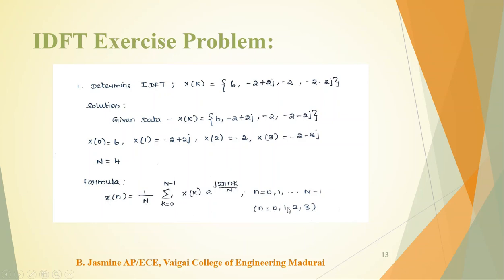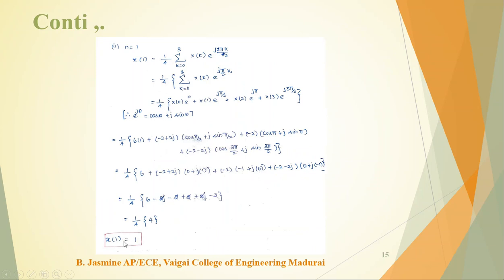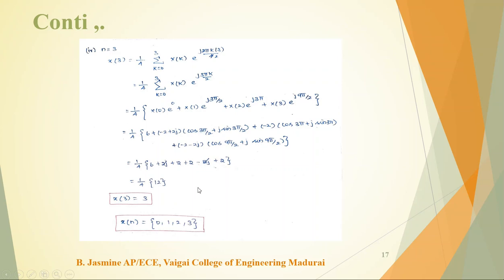The IDFT formula has summation from k=0 to N−1. With four samples, N = 4. Similar to the DFT problem, we substitute n = 0, 1, 2, 3 (instead of k). After substituting all details and simplifying, we get: x(0) = 0, x(1) = 1. If you want to do the calculation, pause the video, write the steps, and check the answers. Continuing, x(2) equals the next value.